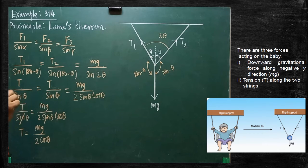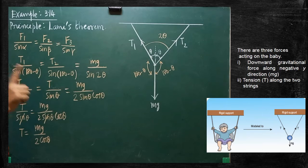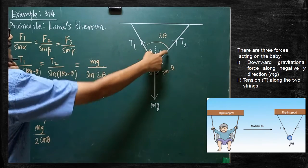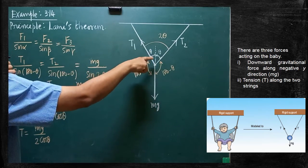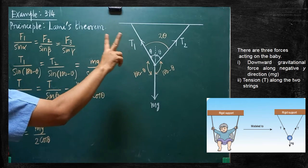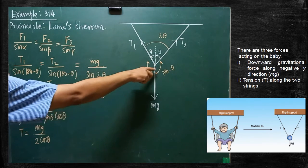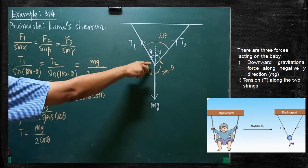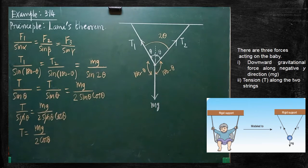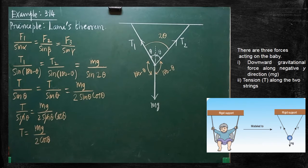One more question is asked: what are the forces acting on the child? Two tensions are acting — one tension here and another tension there. Therefore, two tensions and one gravitational force are acting on the child. Gravitational force always acts towards the downward direction. So tensions and gravitational force are acting on the child. This is the formula with which we can calculate the tension.